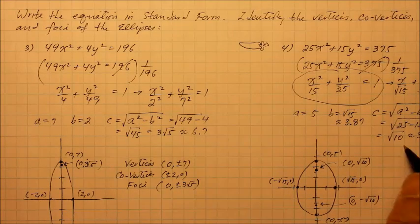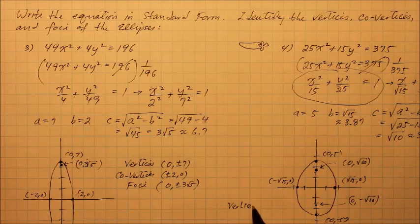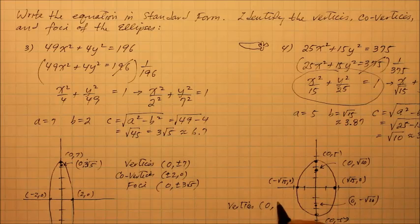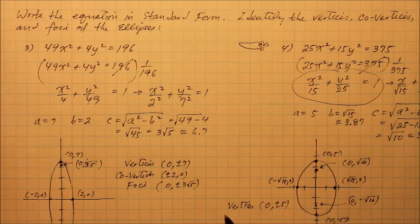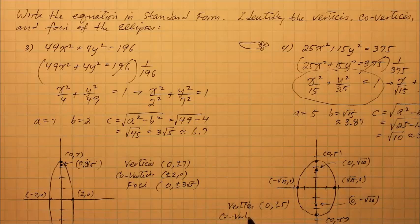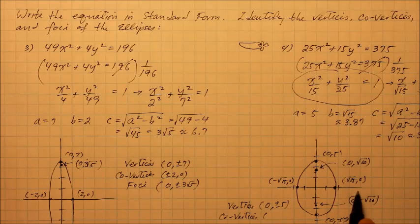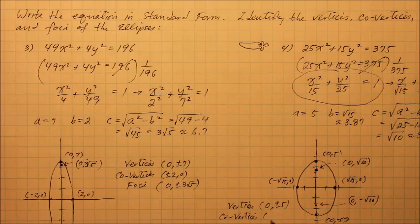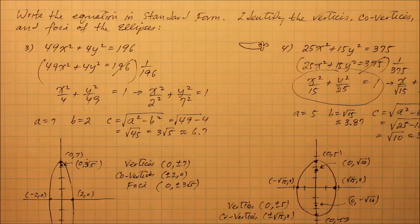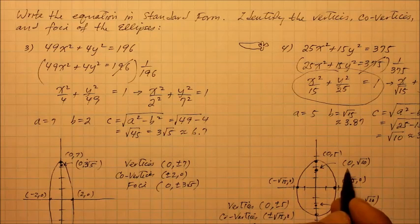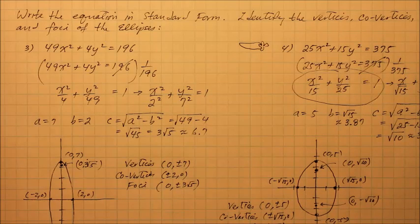Okay, and if they say list it all out, then you go like this. Then the vertices are, again, 0 and plus or minus 5 along the vertical axis. Co-vertices are at square root of 15, so plus or minus square root of 15 and 0. And the foci, their coordinates are located as 0 and plus or minus square root of 10. There it is.